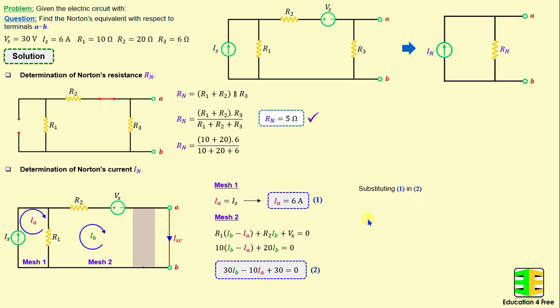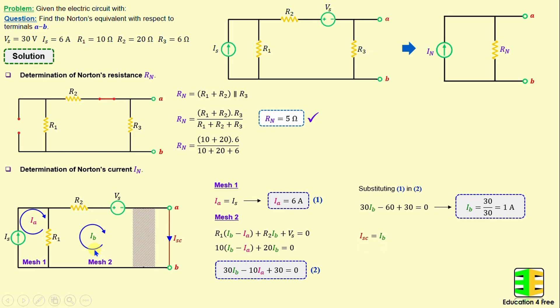By substituting equation one into equation two, we derive one equation in terms of IB. Simplifying, we obtain IB = 30/30 = 1 amp. The short circuit current Isc is equal to IB, meaning Isc = 1 amp. We know that the Norton current IN is the short circuit current Isc calculated between terminals A and B, so IN = 1 amp.